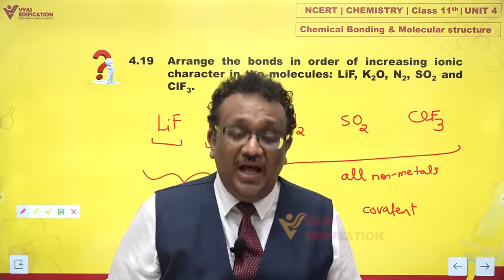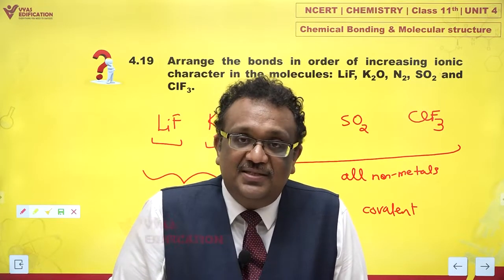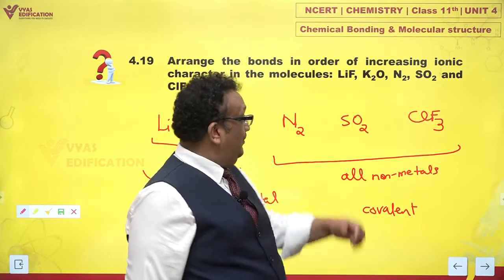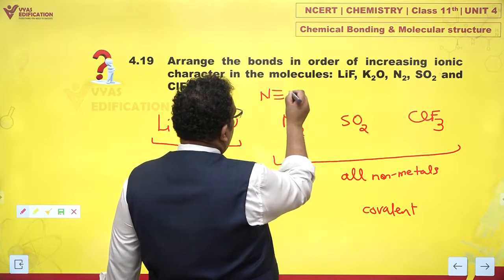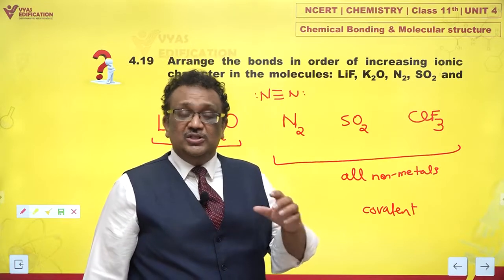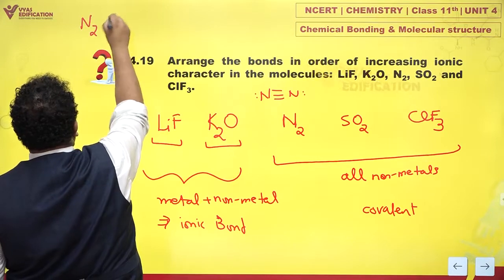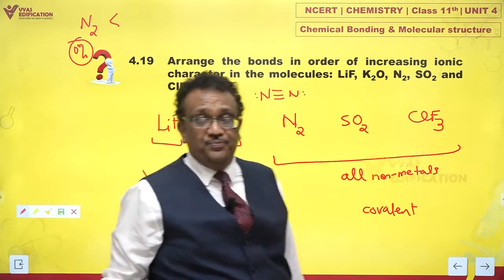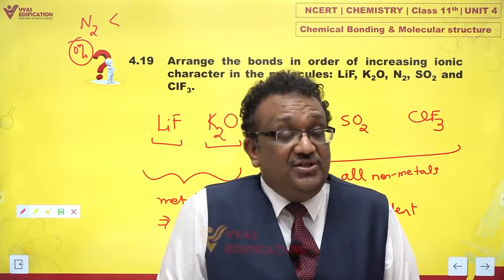If they are more covalent, then naturally their ionic character would be much less. But would there be ionic character at all? Of course there would be. However, if you look at N₂, both atoms are nitrogen only, so this is purely covalent — this has 0% ionic character. So the minimum ionic character is possessed by N₂, which is 0%.